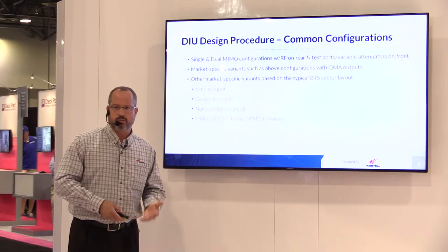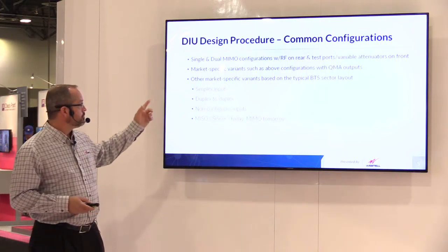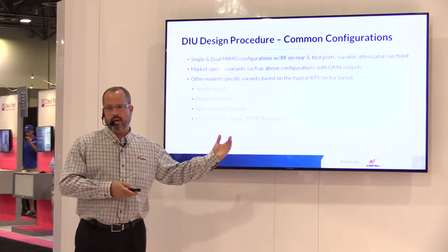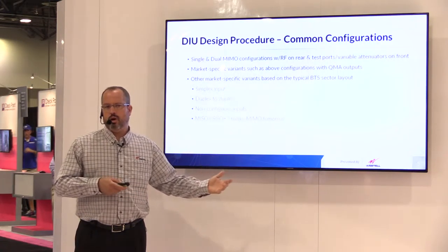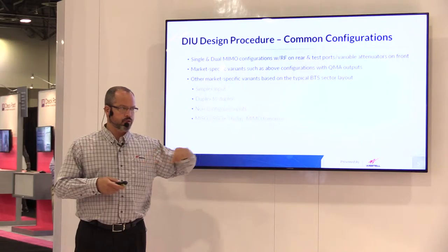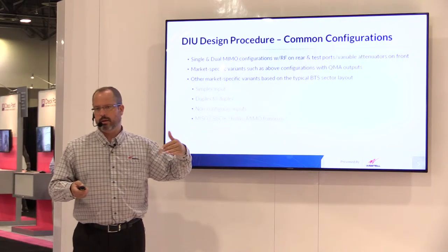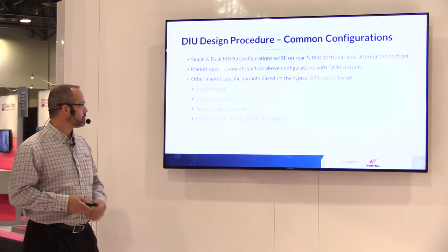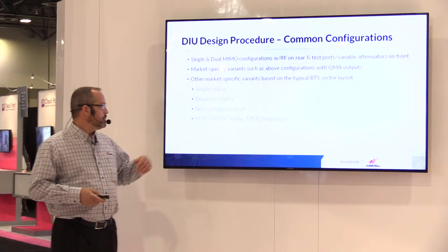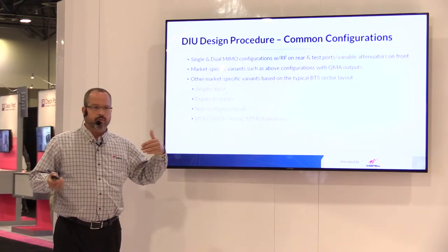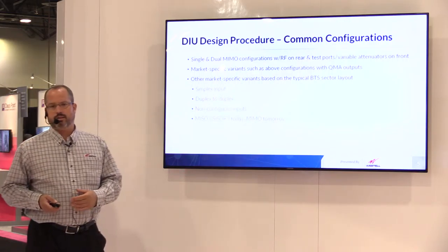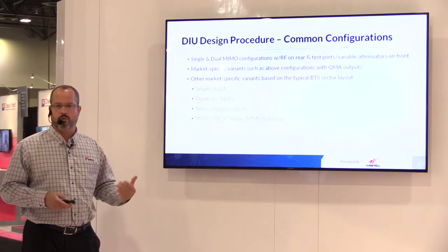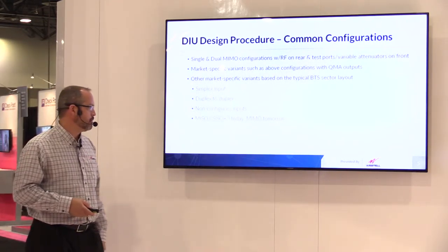You weren't paying for unused components, ports, and those sorts of things. We do have some market-specific variants, so if market X likes N outputs, we'll build them with N. Certain markets would like QMA or SMA, and that applies to the inputs, the outputs, the test ports, and so on. A few markets have duplex-to-duplex. If you're doing a passive DAS or even some of the fiber trays that ask for a duplex input, we were able to do that. It's an extra step, a little bit more loss involved, but generally that's all figured into the configuration process.